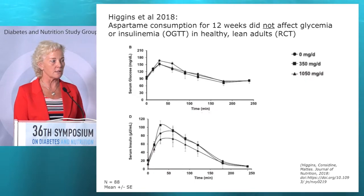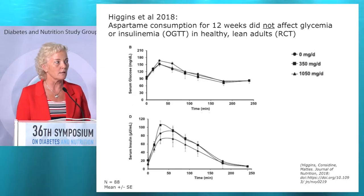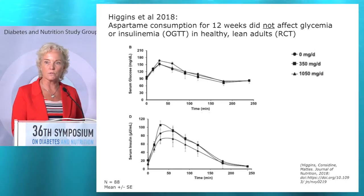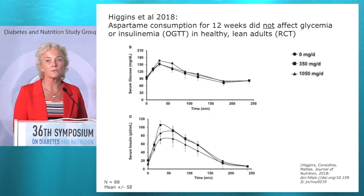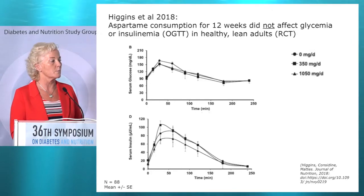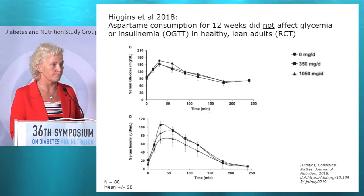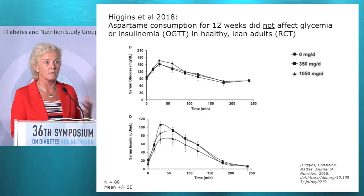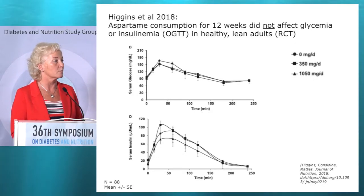There was another very nice study published recently from the group of Richard Mattis. They intervened with aspartame at two different doses or nothing, in a drink for 12 weeks. The study was powered to look at glycemia, with about 90 subjects. What they saw with an OGTT after 12 weeks was that there were no differences at all between the three groups. These were healthy lean adults, which is also important to remember — what are the subjects? Were they overweight, at risk, prediabetic?